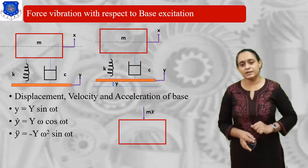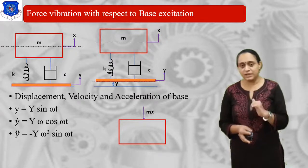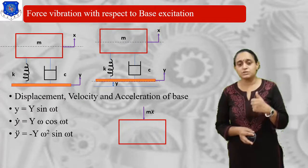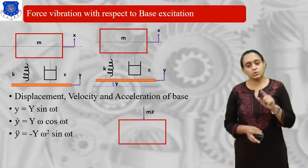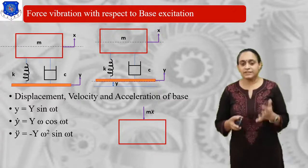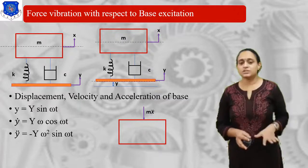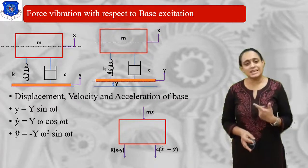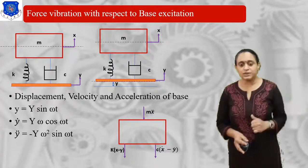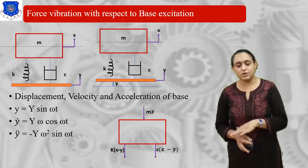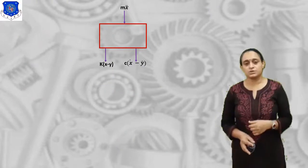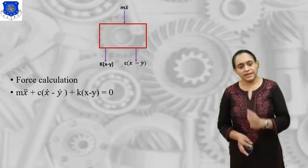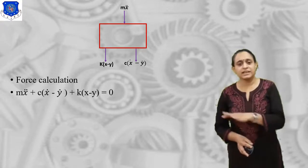Now let us draw the free body diagram. Mass m has displacement x, so what is the acceleration? In the downward direction, the inertia force is mẍ downward. If the system moves upward, the acceleration is in the downward direction, so the total inertia force on the mass is mẍ downward. The spring force is k(x-y) downward, and the damping force is c(ẋ-ẏ), also in the downward direction.